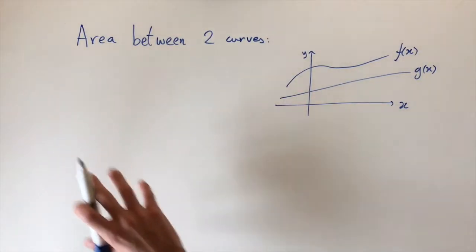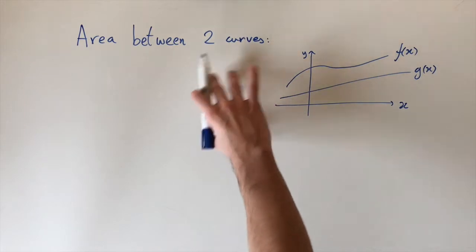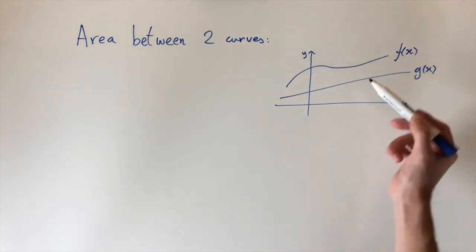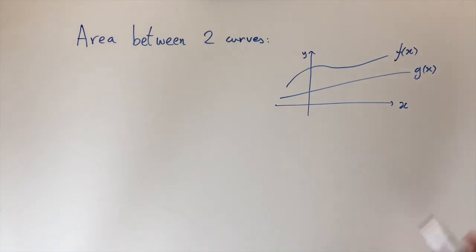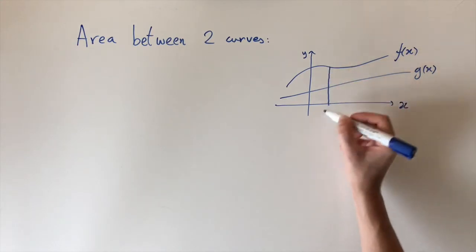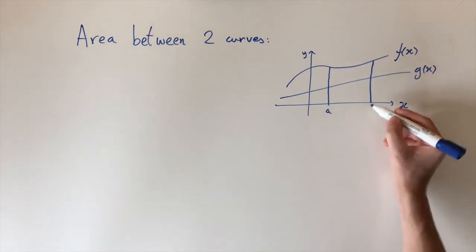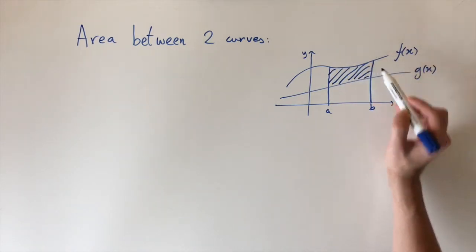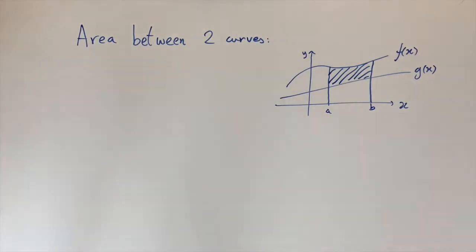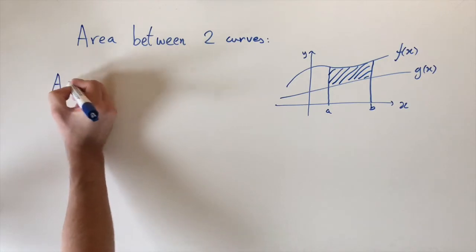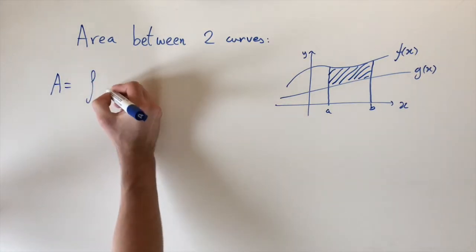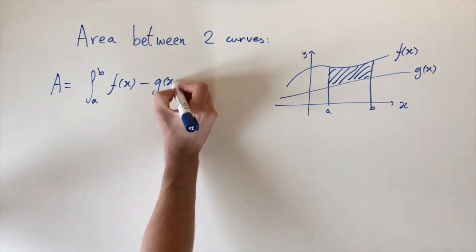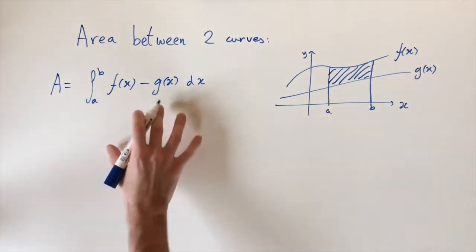Today we're looking at integration that corresponds to finding the area between two curves. Consider two arbitrary functions f and g, where f is above g. If we want to find the area between these two curves in a certain region with limits a and b, there's a really nice formula: the area A equals the integral from a to b of f(x) minus g(x) dx.